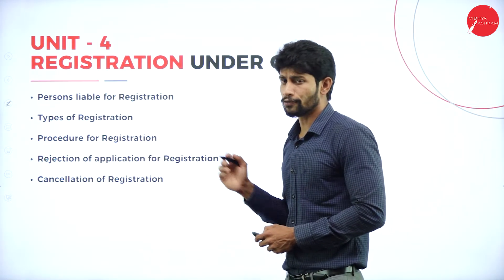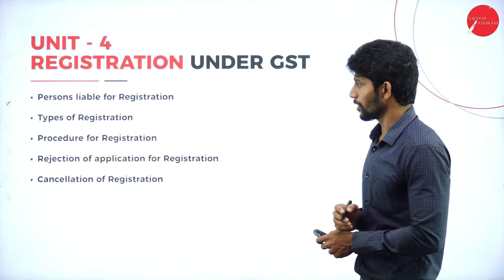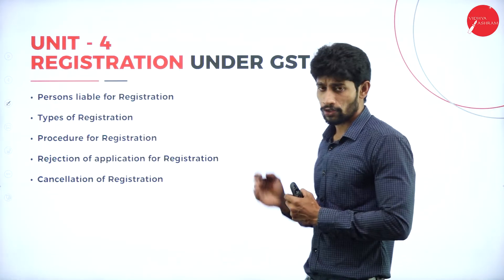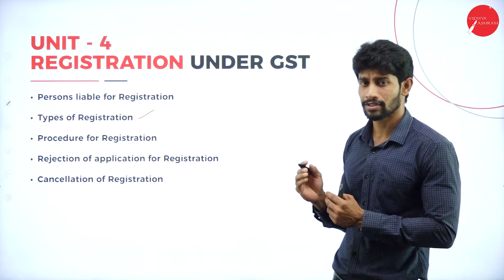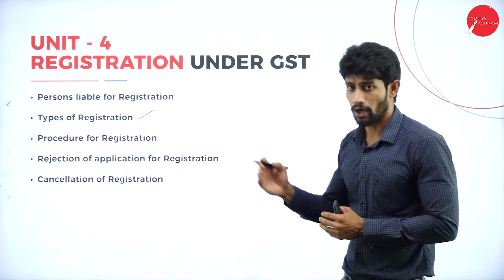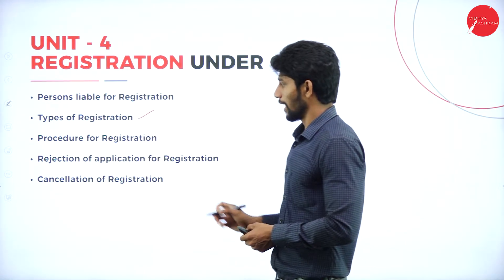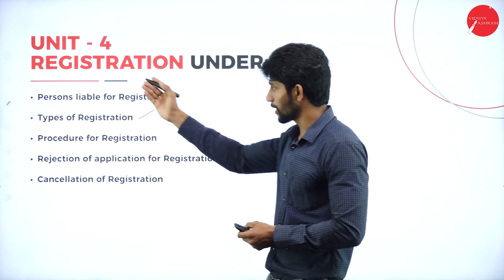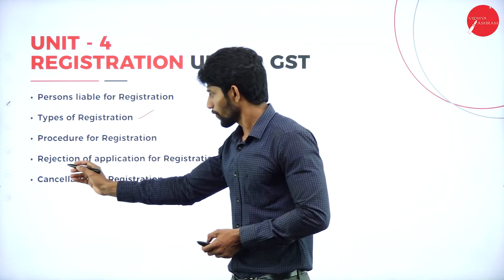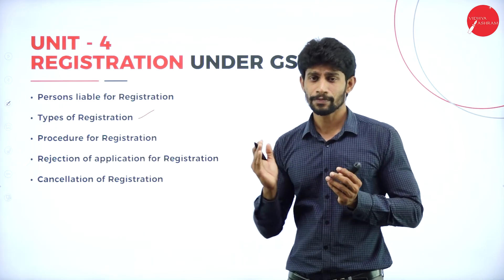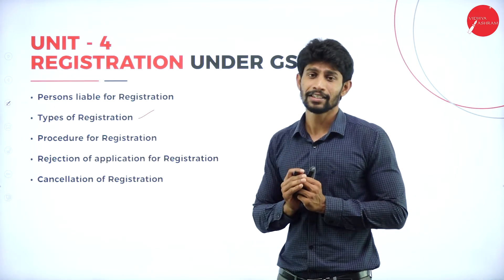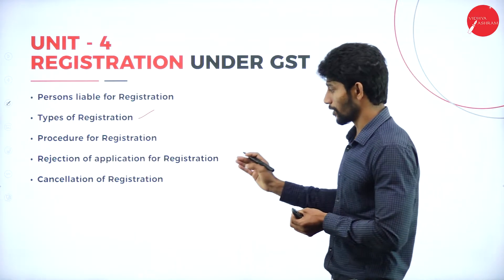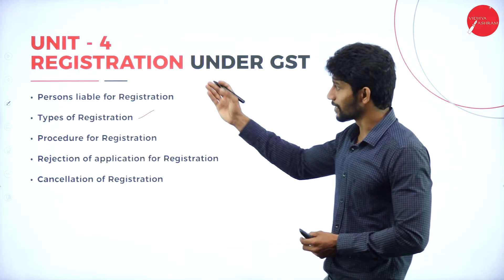In Unit 4, registration under GST, we'll study persons liable for registration, types of registrations such as compulsory and voluntary, and the procedure to follow to get registered under GST. We'll also cover rejection of applications for registration — the circumstances under which the authority rejects them — and cancellation of registration, covering the scenarios in which a supplier's registration can be cancelled.